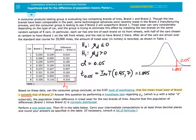Treadwear can vary considerably depending on the type of car, and the group is trying to eliminate this effect by installing the two brands on the same random sample of eight cars. In particular, each car has one tire of each brand on its front wheels, with half of the cars chosen at random to have Brand 1 on the left front wheel, and rest to have Brand 2 there. After all of the cars are driven over the standard test course for 20,000 miles, the amount of tread wear in inches is recorded, as shown in Table 1.